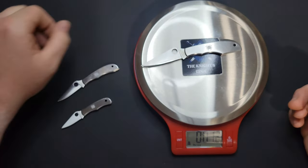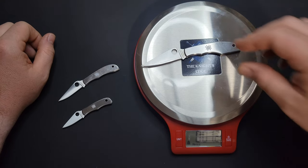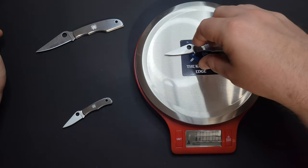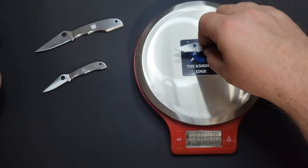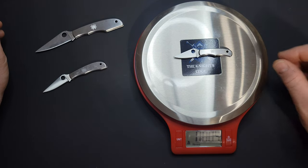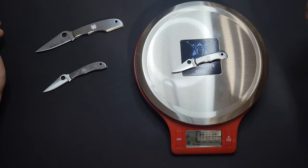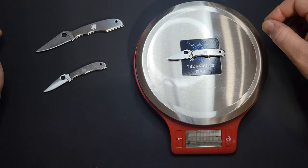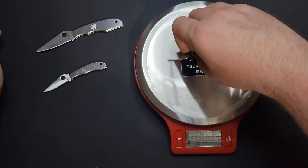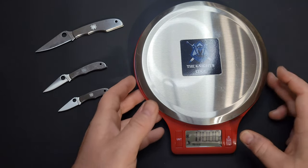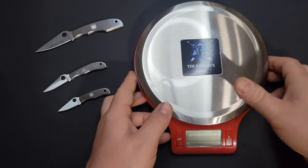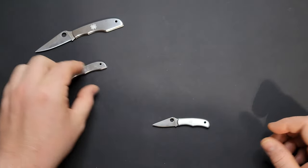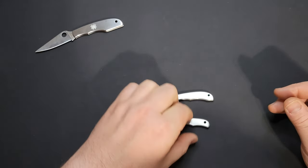The largest one, the grasshopper, coming in at 1.2 ounces. Pretty light. The honeybee, coming in at 0.6 ounces. And the bug, 0.4 of an ounce. Under half an ounce on the bug, incredibly light. If I was to go for a keychain knife, the bug would be it. I would go for the bug for sure.